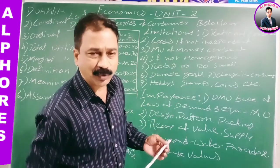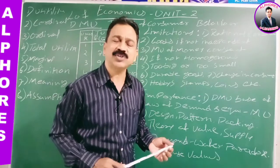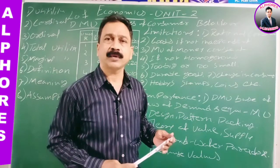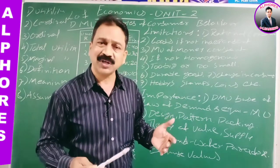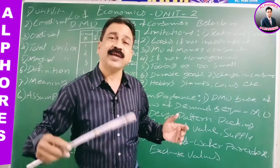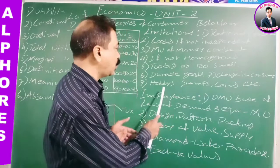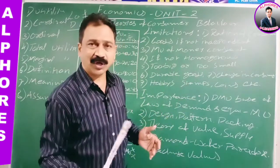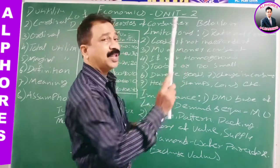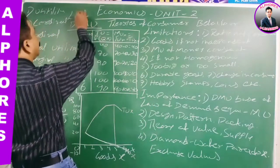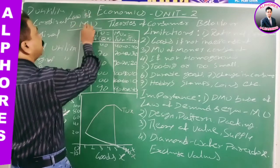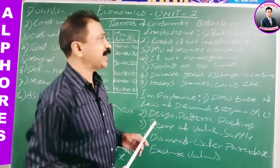Next limitation: durable goods. For durable goods you cannot calculate the marginal utility, because for a longer period you are going to use it. Even if you have more commodities, you cannot calculate that marginal utility for a shorter period because you can use it again and again in the coming future. So for durable commodities this law is not applicable — that is one of the limitations to the law of diminishing marginal utility.